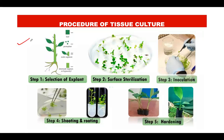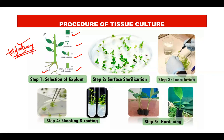The tissue culture procedure typically involves five steps. The first step is selecting the explant — deciding which part of the plant to use, such as a leaf, protoplast, nodal segment, internode, or root. All plant cells have the capability of regenerating into a whole organism; this property is known as totipotency. Because of totipotency, any part of the plant can potentially be used as an explant.